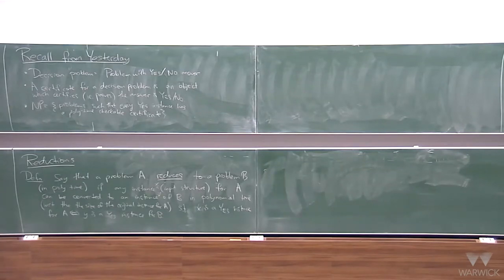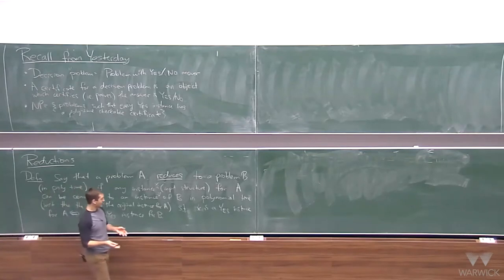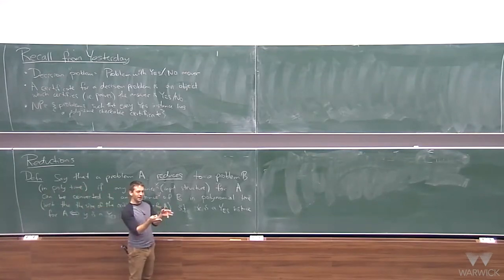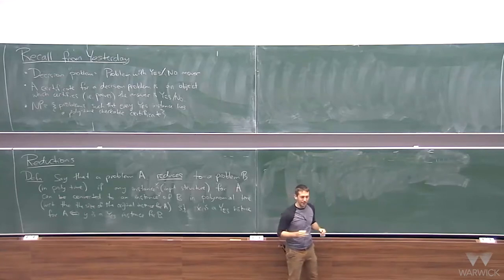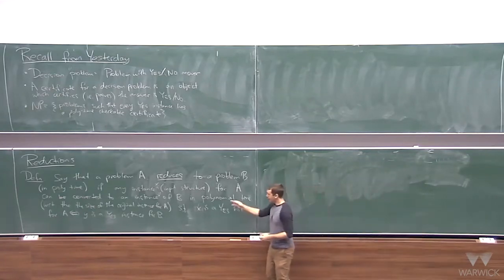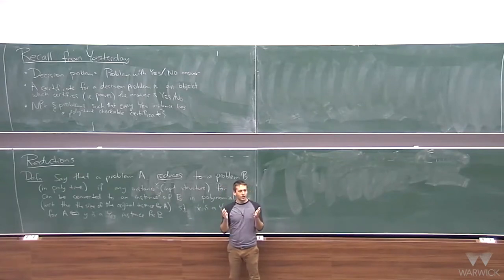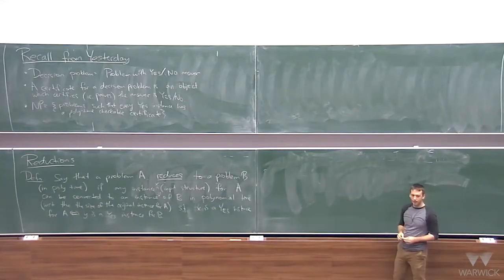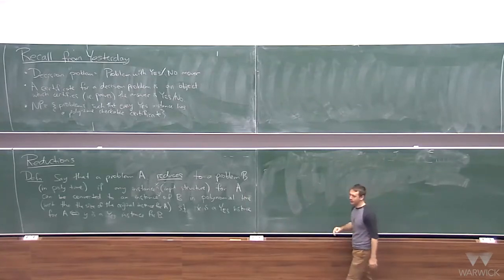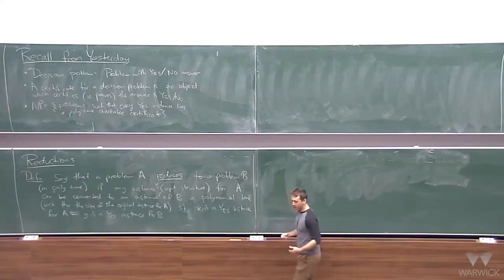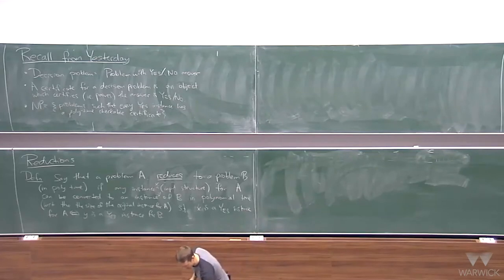There's a question about converting to multiple instances. If you convert to multiple instances, you could make a different problem B-prime where the input is several instances of B — it's not really any different. For purposes of this module, let's work with the single-instance definition; it's not going to make much of a difference.